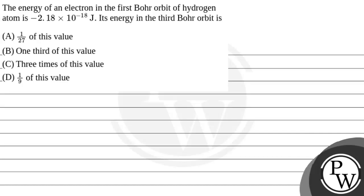Hello children, let's read the problem. The energy of an electron in the first Bohr orbit of hydrogen atom is -2.18 × 10^-18 joules.